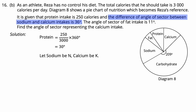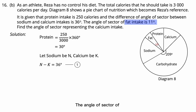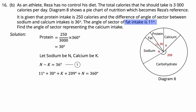Let sodium be N and calcium be K. N minus K equals 36 degrees — Equation 1. The angle of sector of fat intake is 11 degrees, carbohydrate is 209 degrees, calcium is K, and sodium is N. A full circle has 360 degrees, so: 11 + 30 + K + 209 + N = 360 degrees — Equation 2.